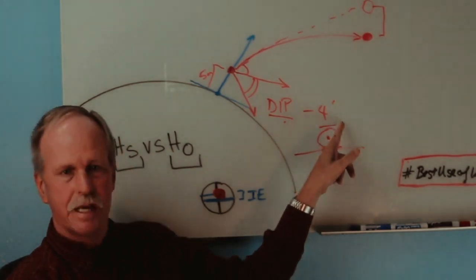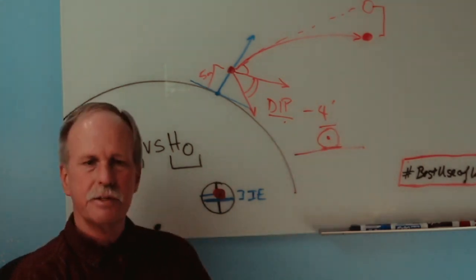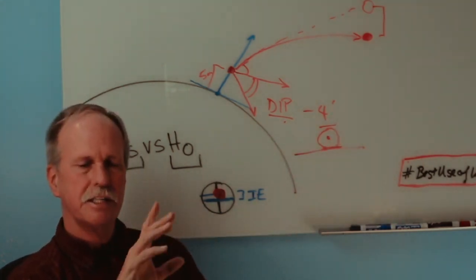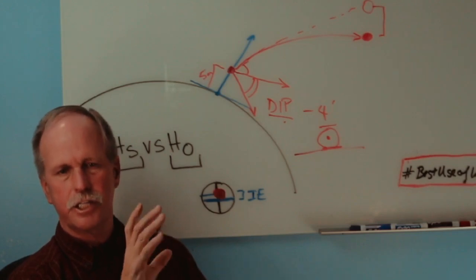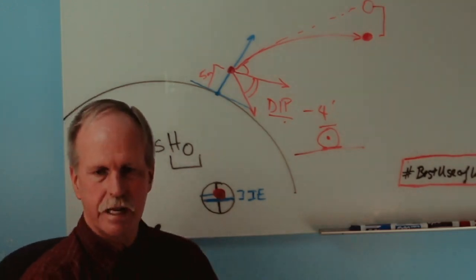And there are values for measuring from the lower limb of the sun, or sometimes you'll measure from the upper limb of the sun. There are different values and those values change throughout the year as the distance from the earth to the sun changes as we orbit. Now let's go back to the naval almanac and have a look at that.